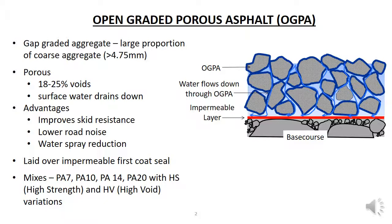OGPA has different mixes according to the grading and amount of voids in the mix. All OGPA is prefixed with PA for porous asphalt, then the maximum aggregate size, and in some mixes an indication of the void content and resulting shear strength. The suffix may be HS, which is high strength with a lower void ratio, or HV, which means high voids — about 25 to 30% voids — giving superior noise reduction and better drainage, but needing additives in the binder for required strength. For example, PA15HS is a porous asphalt with a maximum aggregate size of 15 mm and a lower void ratio, while PA25HV is a porous asphalt with a maximum 25 mm aggregate size and 25 to 30% voids. It is suggested you review the specification for these gradings in more detail.